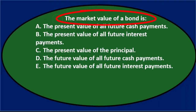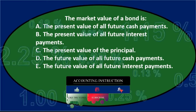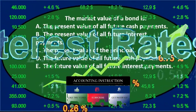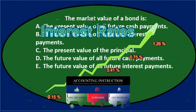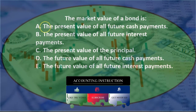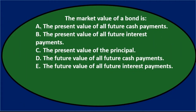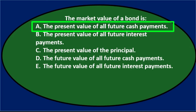The market value of a bond is really the price you're going to sell it for. It's not going to be equal to the face amount of the bond because the interest on the bond could be different than the market rate. The key word is that all options involve time value of money — present value or future value. Option A says the present value of all future cash payments.